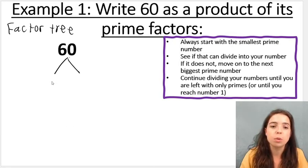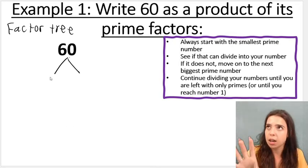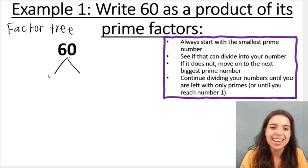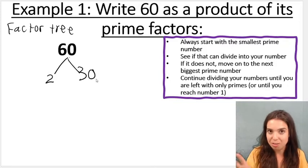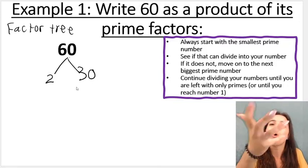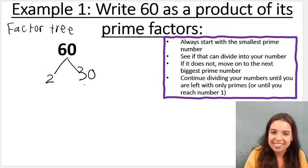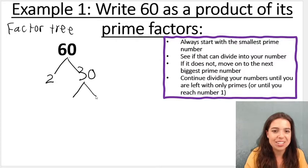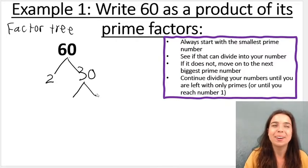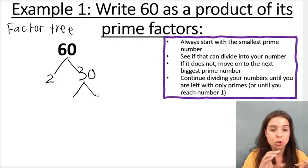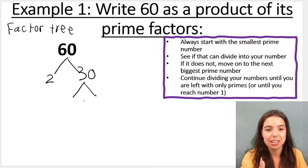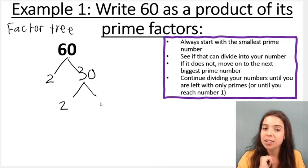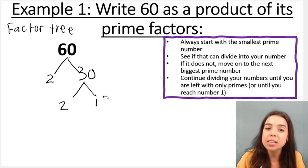Can two divide into 60 without a remainder? Is two a factor of 60? Yes, it is. Two can divide into 60, 30 times without a remainder. Then you go again — you start with the smallest prime number again. Can two, which is the smallest prime number, divide into 30? Yes, it can. 15 times.